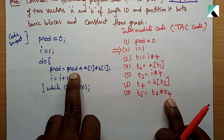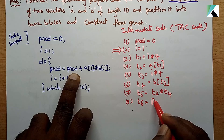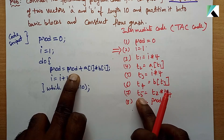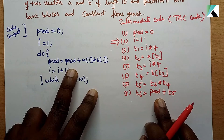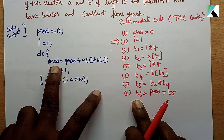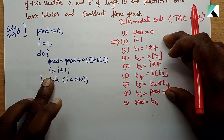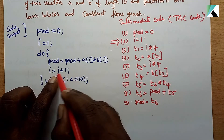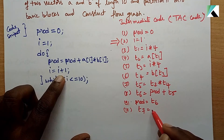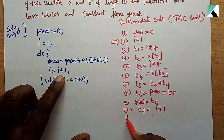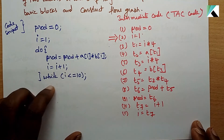Statement 8: t6 = prod + t5 (accumulate the product). Statement 9: prod = t6. Statement 10: t7 = i + 1. Statement 11: i = t7 (increment the loop index). Next, we write the while-loop condition.